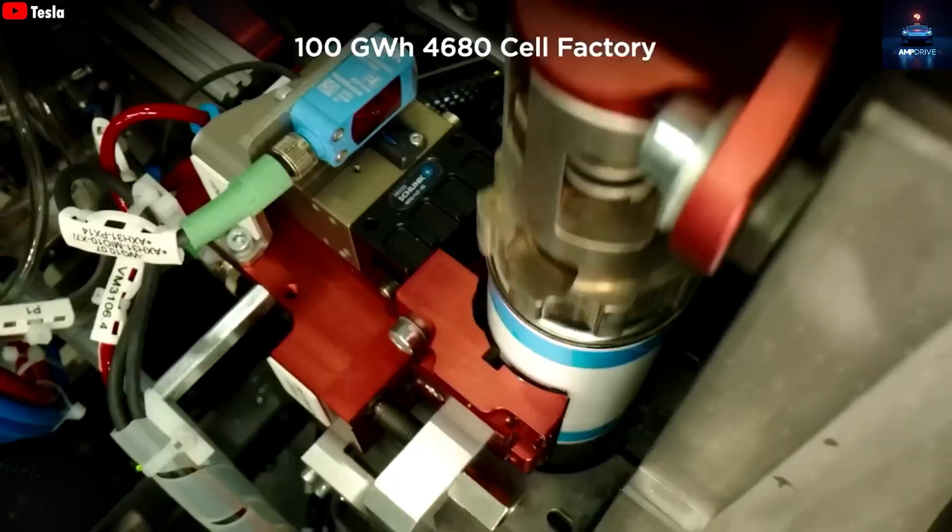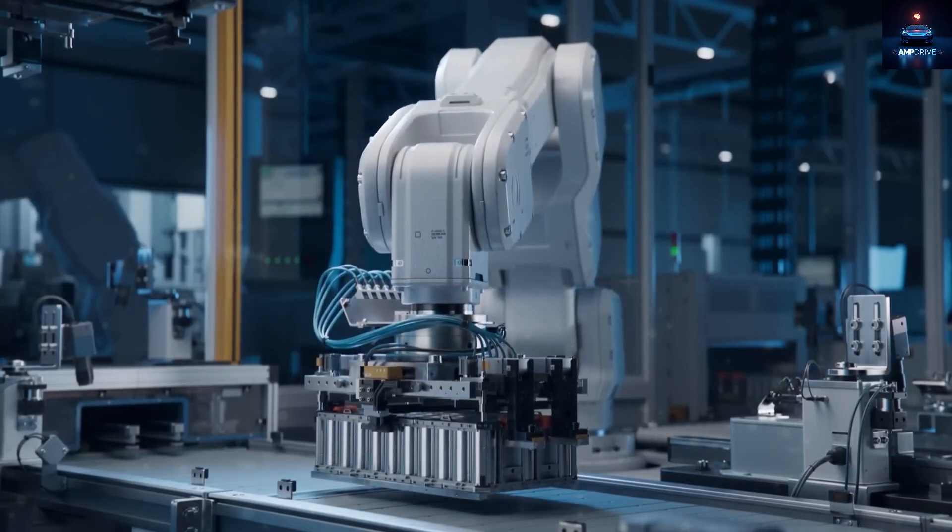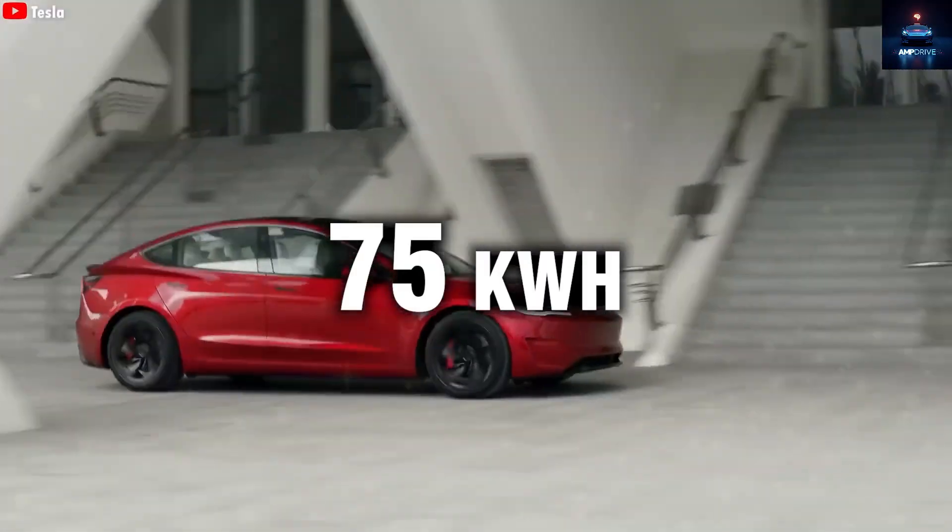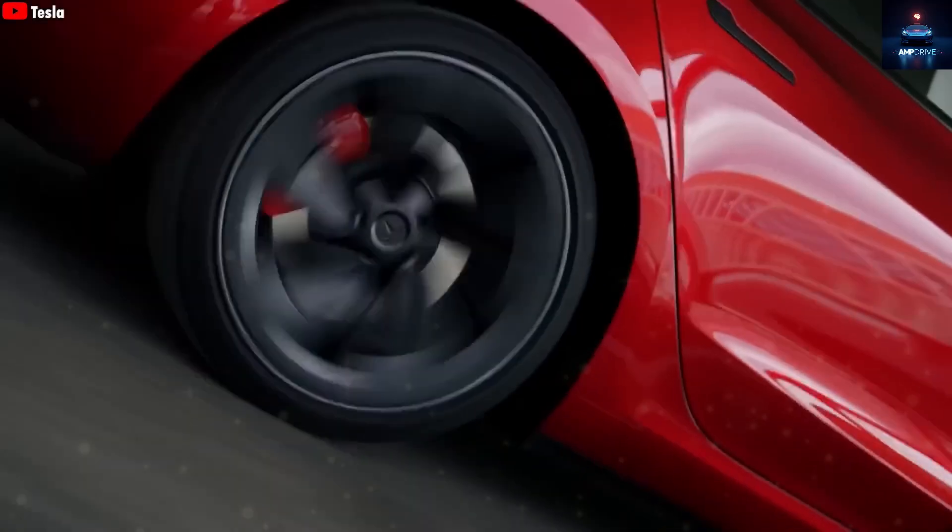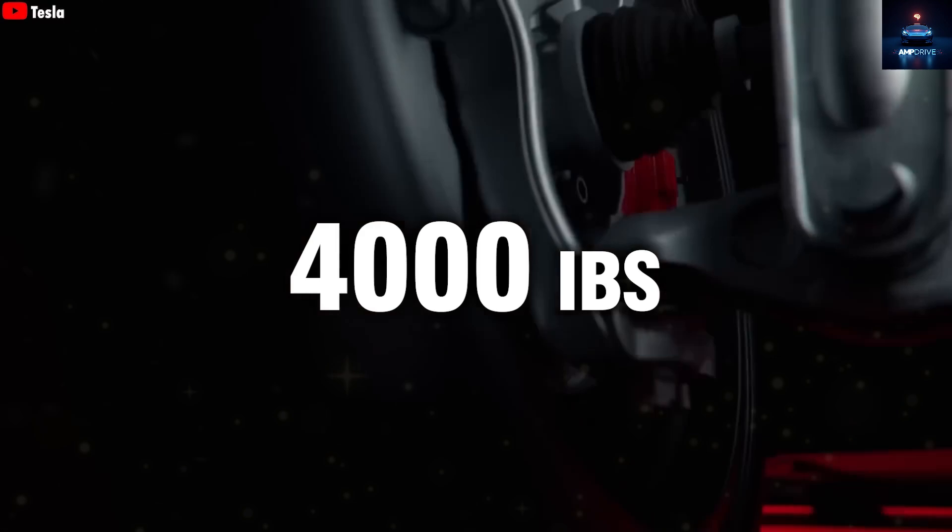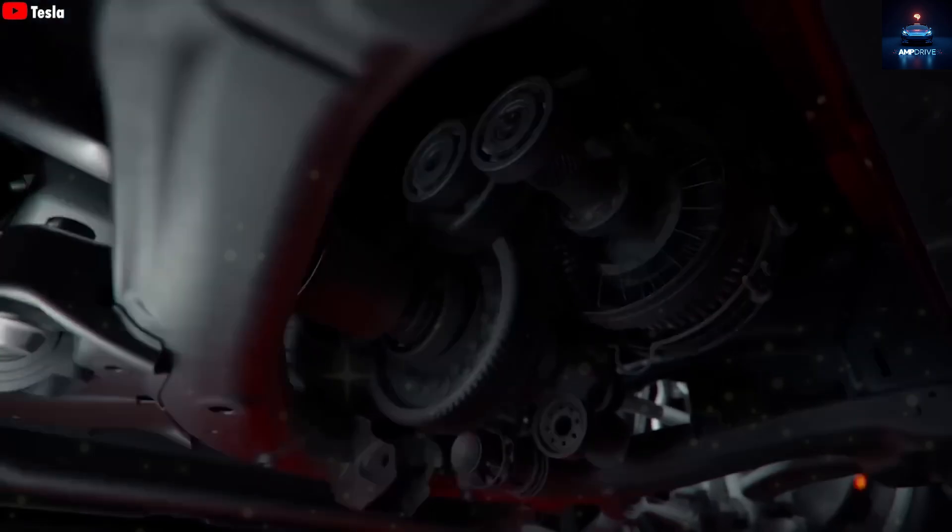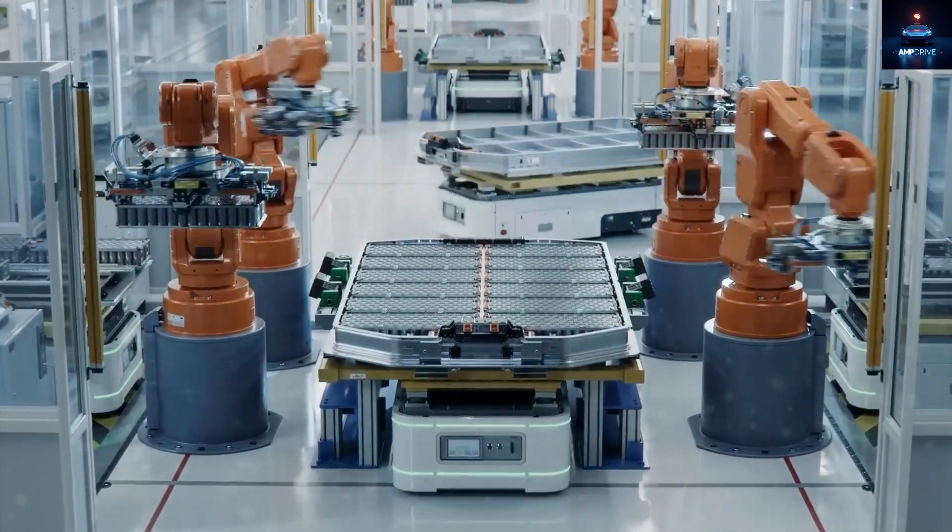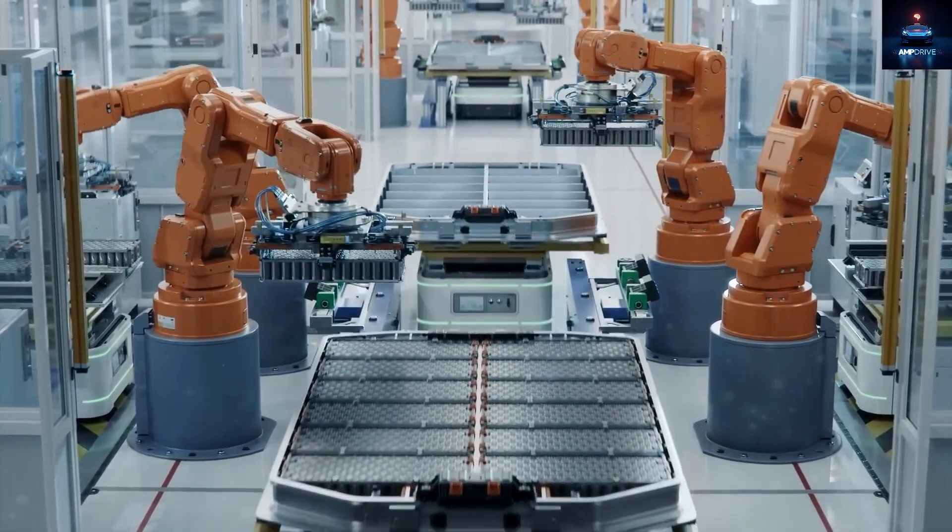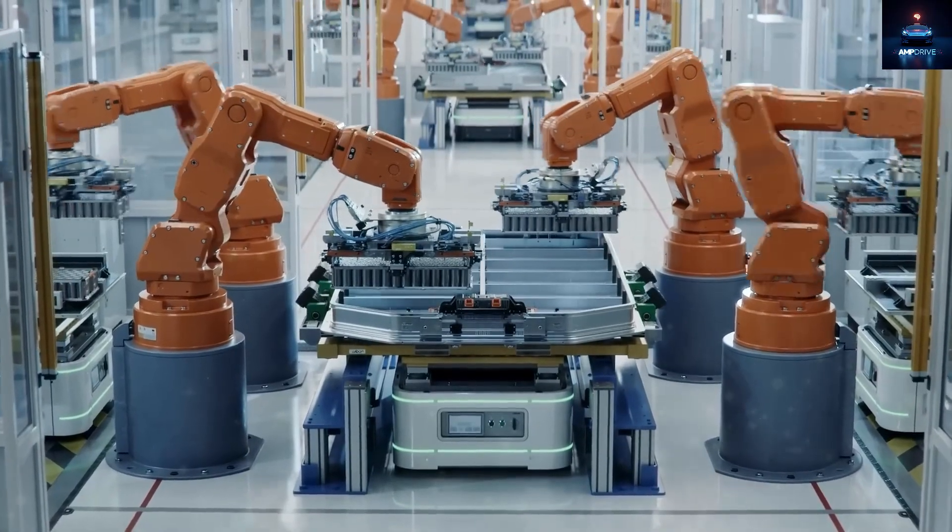Tesla claims the 4,680 can boost vehicle range by 16% just because of its energy density and innovative tabless design. When combined with new techniques like building battery cells directly into the vehicle's frame, that improvement can go up to nearly 30%. For example, take the Tesla Model 3. It currently has a 75-kilowatt-hour battery pack, giving it a range of about 363 miles and a total weight of roughly 4,000 pounds using regular lithium-iron phosphate batteries.